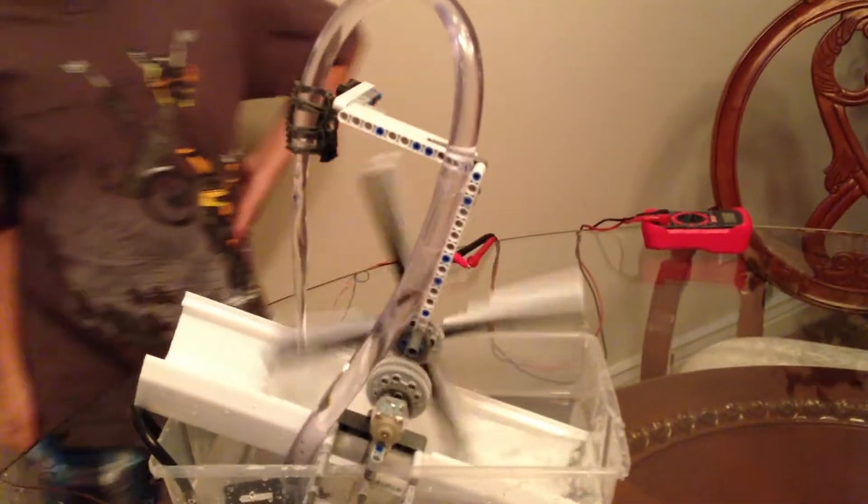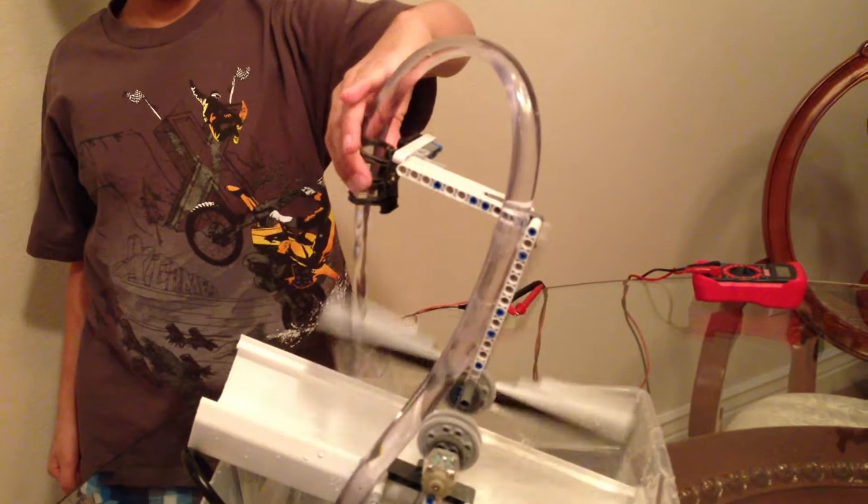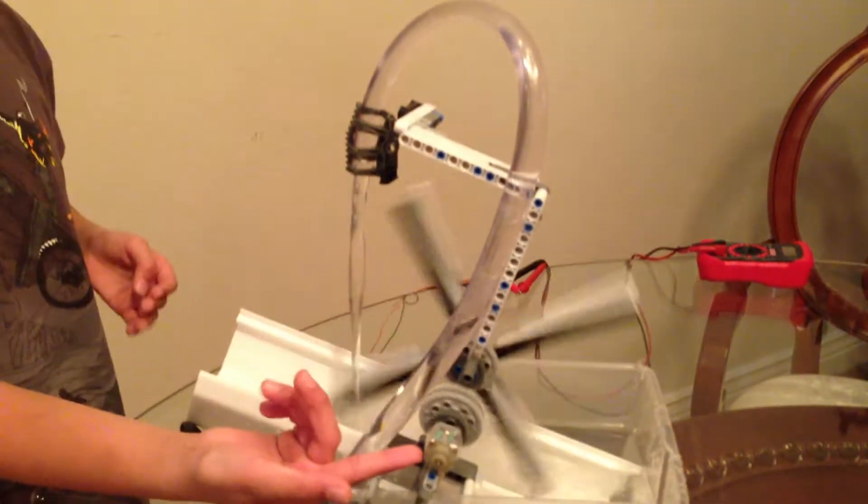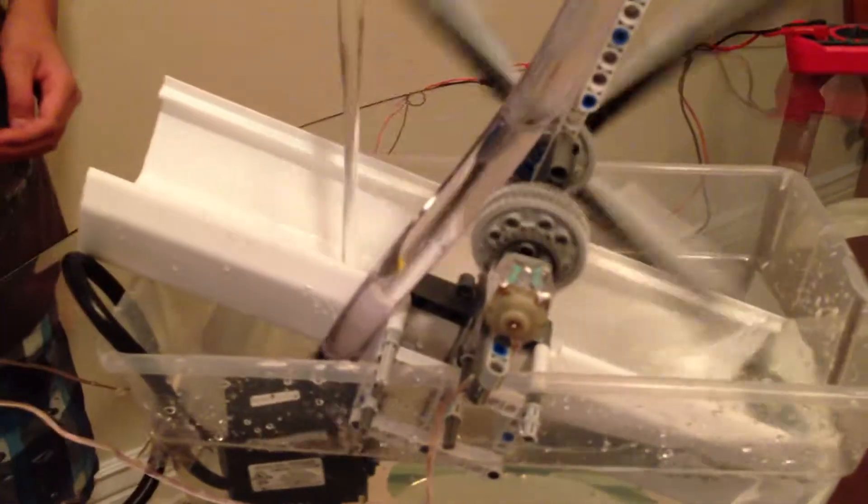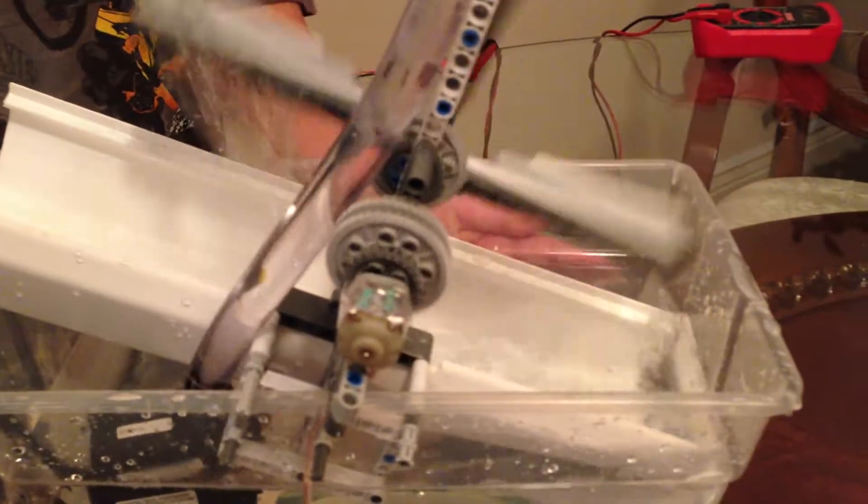As you can see, the water is falling and hitting this turbine. The turbine is spinning the generator which is generating electricity. The used water is going down into this box.